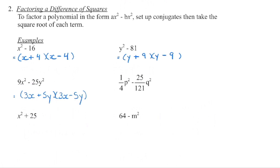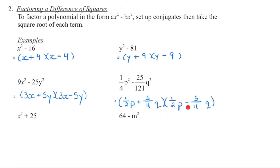For the fraction example, each term is a perfect square and we are subtracting, so we have a difference of squares. We set up our conjugates, one is a plus and one is a minus. The square root of 1 is 1, the square root of 4 is 2, the square root of 25 is 5, the square root of 121 is 11, the square root of q squared is q, and the square root of p squared is p.